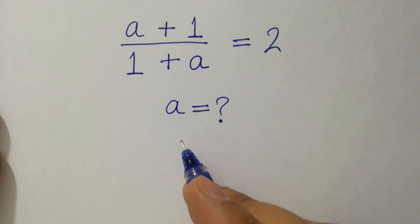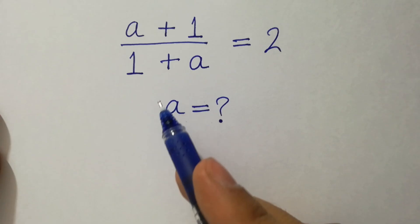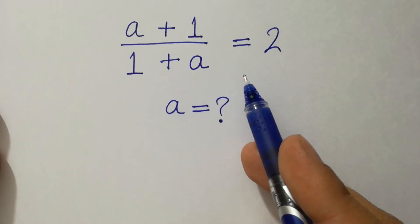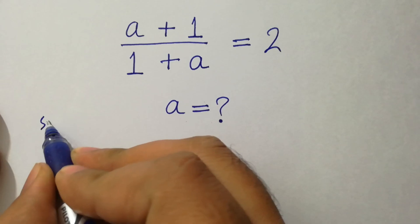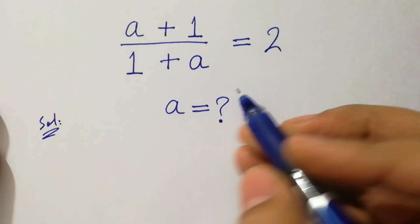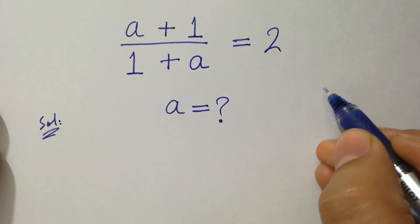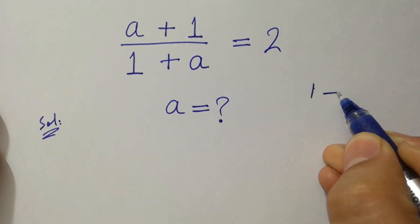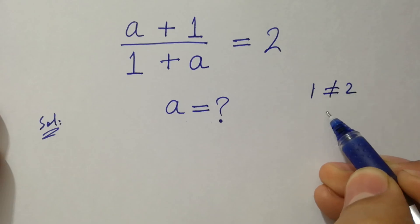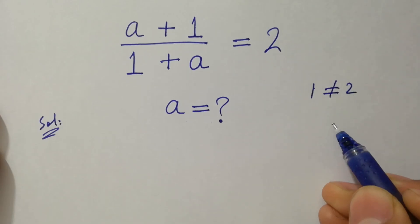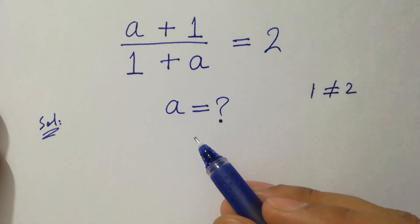Hello friends, find the value of a if (a+1)/(1+a) = 2. If we cancel out a+1 and 1+a, we get 1 = 2, where 1 does not equal 2, which means we can't solve this problem directly. But how do we solve this kind of problem?